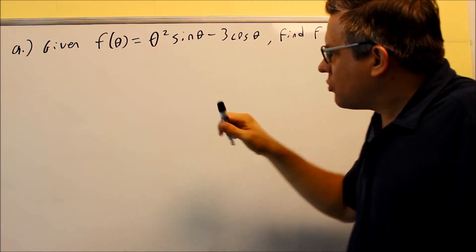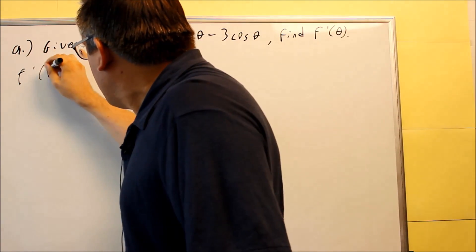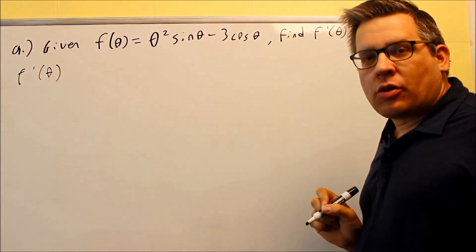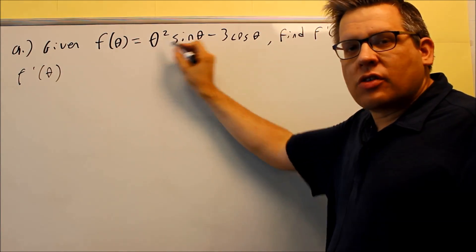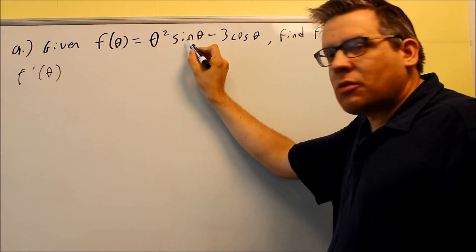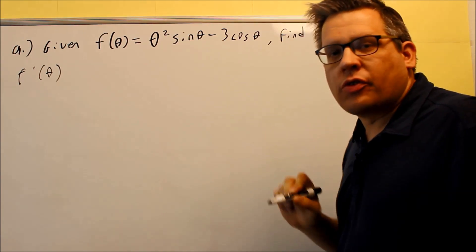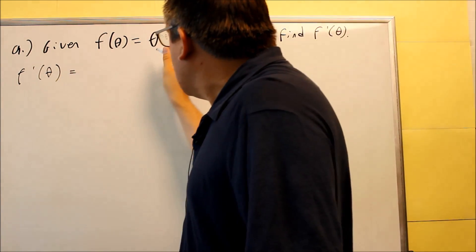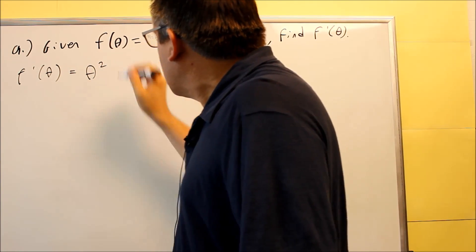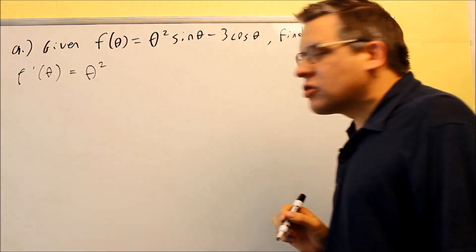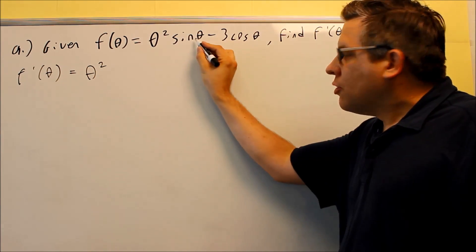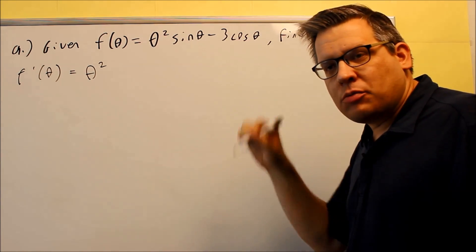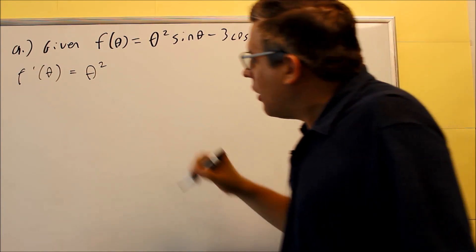So when we do the derivative for this one, we're going to apply the product rule. It's the first thing times the derivative of the second plus the second times the derivative of the first. I got the first thing, theta squared, times the derivative of sine — the derivative of sine we know automatically is going to be cosine from the beginning of this section.